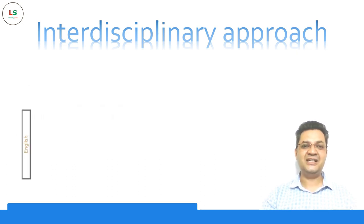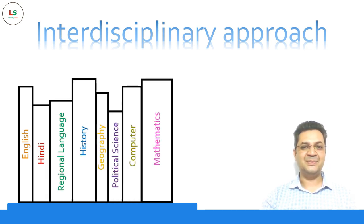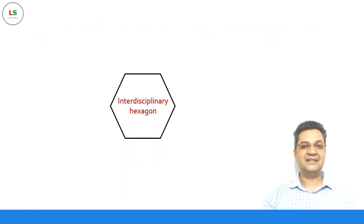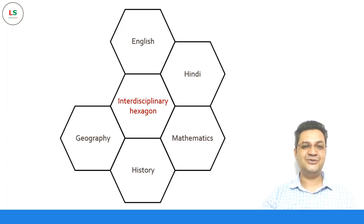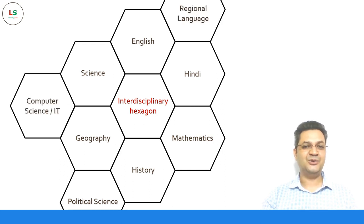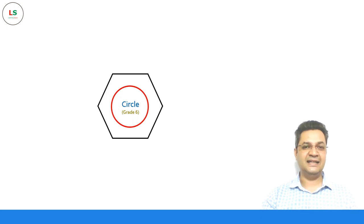Here we have different subjects from grade 6 and let's see how we apply the interdisciplinary approach with them. We start by taking an interdisciplinary hexagon and placing the various subjects around it: English, Hindi, Mathematics, History, Geography, Science, Political Science, Regional Language, and Computer or IT. We then place a concept in the center — here I am taking the example of 'circle', which is taught in grade 6, and let's see the interlinking with the various subjects.